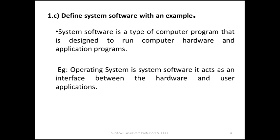For example, the operating system is a type of computer program that is designed to run computer hardware and application programs. It acts as an interactive layer — that is, it acts as an intermediate between the computer and the user. Through the operating system, we are interacting with the computer.